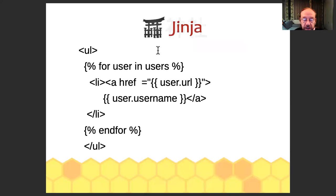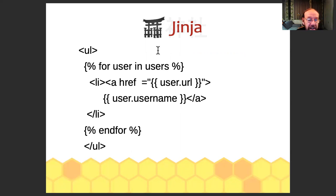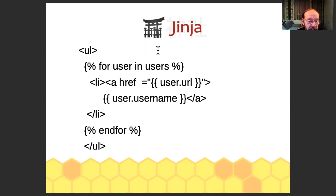Before we get to the actual tutorials, let's talk about Jinja. Jinja is a templating language. You can see this is a mix of HTML and Jinja: the first line is HTML, the second line starts a loop in Jinja, the third line is a mix of both where you're setting the value of the href to be user.url, and the fourth line sets the username to display. Then you end the list, end the for loop, and end the ul. Jinja is quite simple — no rocket science here.